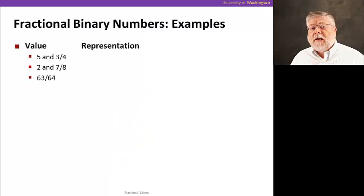Let's take a look at a few more examples of these fractional binary numbers. Let's start with five and three fourths. How would we represent that? Well, the five, which is going to be to the left of the binary point, is pretty easy. That's just one zero one.